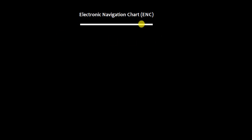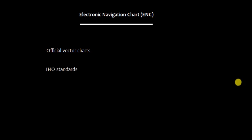Welcome to this video. Here I am going to define what is ENC. ENC stands for Electronic Navigation Chart, and basically these are official vector charts, which means that these charts have to comply with IHO standards. IHO means International Hydrographic Organization, and ENCs are issued on the authority of a Government Hydrographic Office or any other government organization.